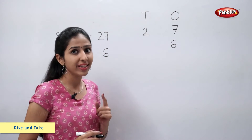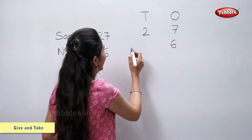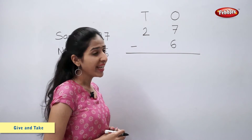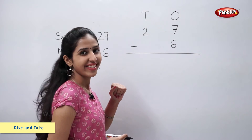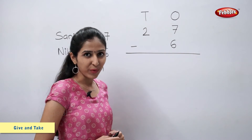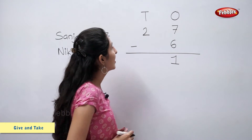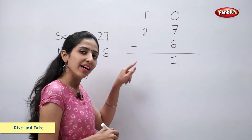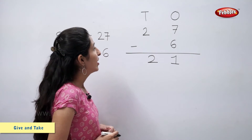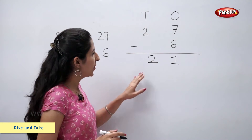We have to find the pearls left with Sanjana, so let's subtract. Let's subtract ones first. 7 minus 6 is equal to 1. 2 comes down. So 27 minus 6 is equal to 21.